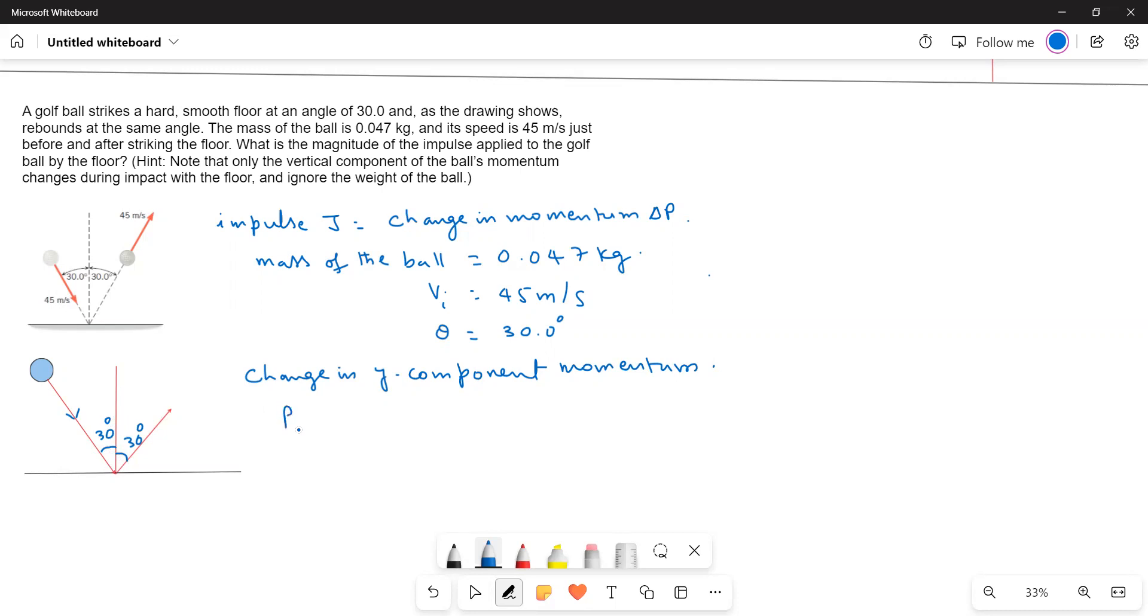Therefore momentum P_initial is equal to mv. So P_iy, that means y-component momentum P_initial y-component, is equal to 0.047 kilograms times 45 meters per second cos 30 degrees.